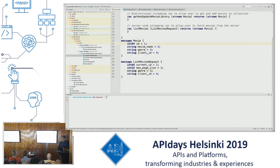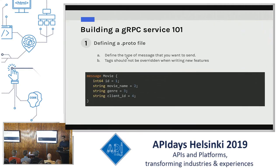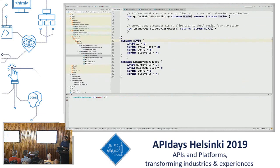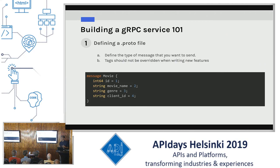In my demo I've got a movie library. My server has a library of movies segregated by genres. The movie message has four attributes. You need to define the type of message you want to send — the message type basically dictates the structure of the payload that can be communicated between the client and server. It needs to be structured to communicate everything required in a single message.